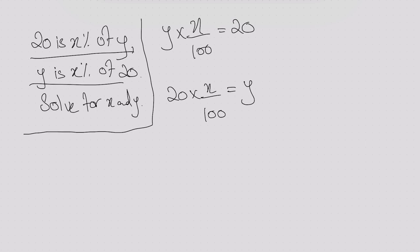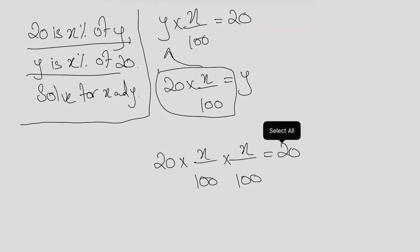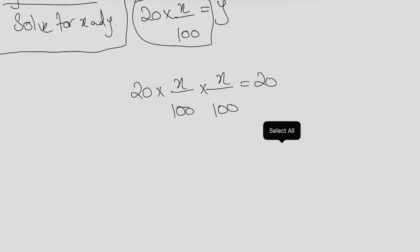Now I have the equation for y over here and I can substitute it over here. So this will be written as 20 multiplied by x over 100 multiplied by x over 100 equals 20.